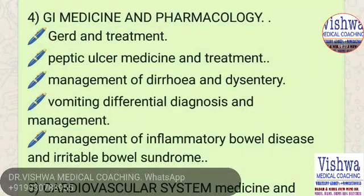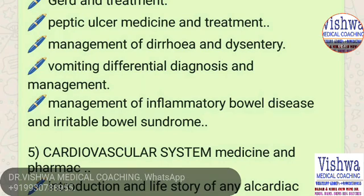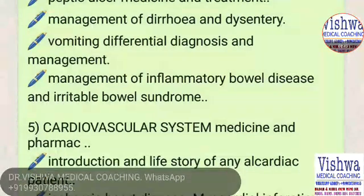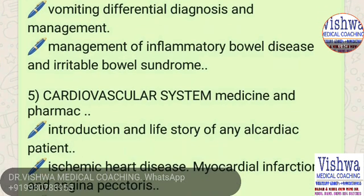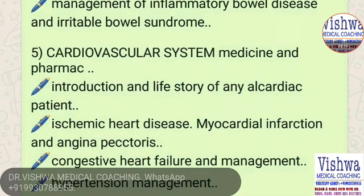In GI medicine and pharmacology, we cover gastrointestinal system pharmacology including gastroesophageal reflux disease from medical, surgical, and pharmacology points of view. Peptic ulcer is also covered from all those points of view, as well as diarrhea and dysentery management. An important topic here is the differential diagnosis of vomiting, which can range from simple gastritis to cancers. We also take inflammatory bowel disease and irritable bowel syndrome.